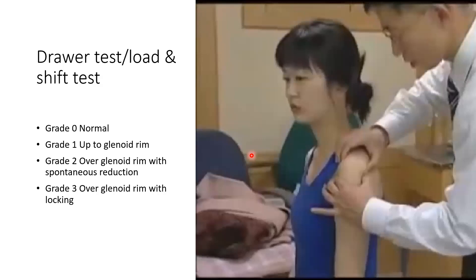The load-shift test, also known as the drawer test: one hand holds the cervical and scapular spine to stabilize, while the other hand holds the humeral head and translates it anteriorly and posteriorly. Grade 0 is normal translation. Grade 1: humeral head translates up to the glenoid rim. Grade 2: goes over the glenoid rim but spontaneously reduces when force is removed. Grade 3: goes beyond the glenoid rim and locks there — does not spontaneously reduce.